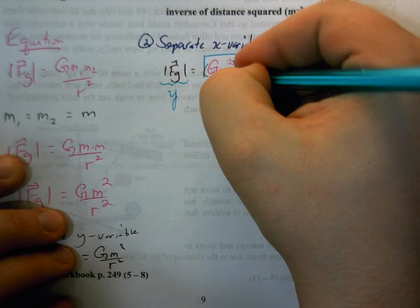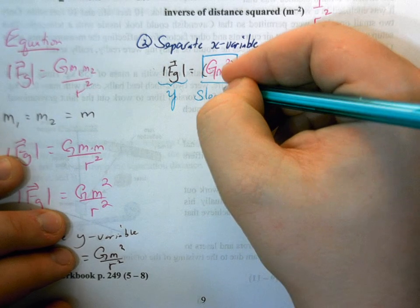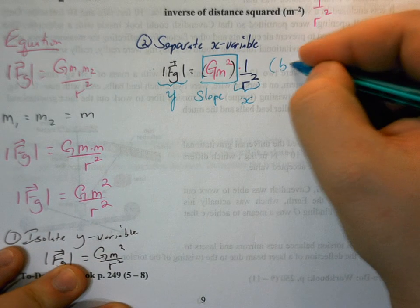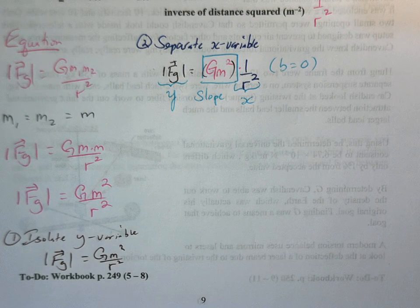What that tells us here is that this GM squared, that is the slope. Now we don't have anything else here. So we could say that in theory, the Y intercept should be zero.